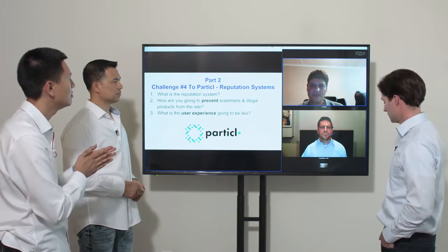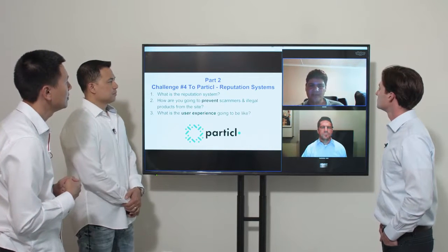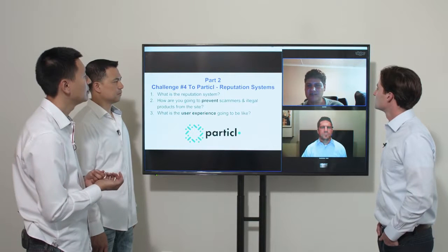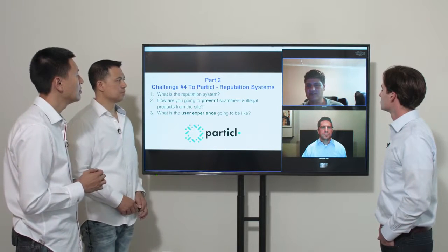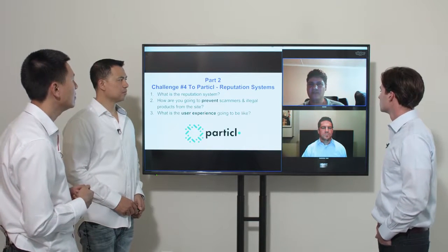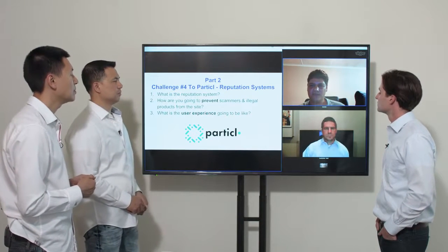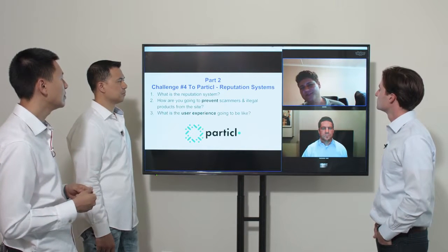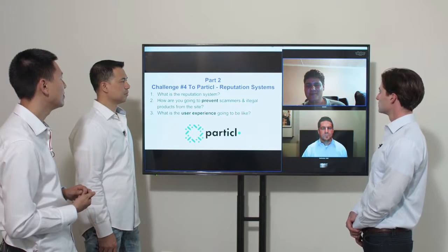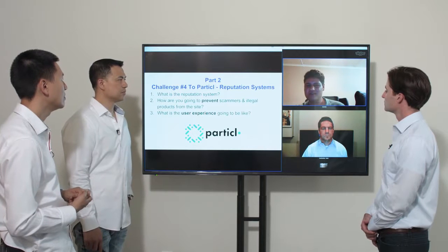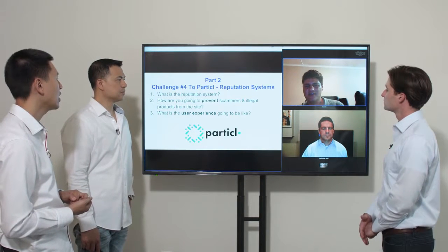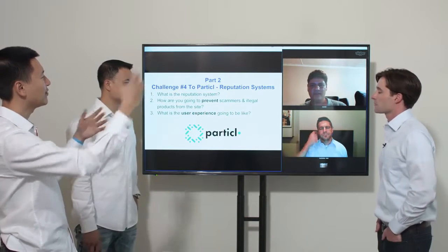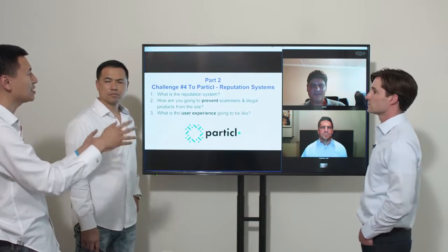Each time you do a successful deal, there will be a transaction on the blockchain with a public key linked to an escrow address that you have the private key for. You can sign a signature to prove you had a successful deal — so to prove your reputation, you sign all your successful blockchain deals. If you do something wrong, the other party can record that malicious deal on the transaction as negative reputation. Would the UI be something familiar like zero to five stars?